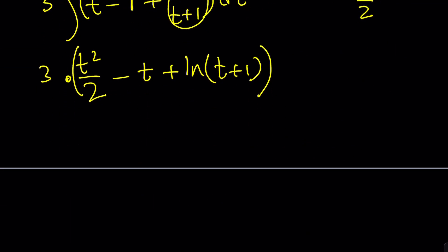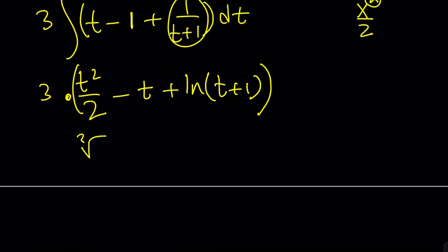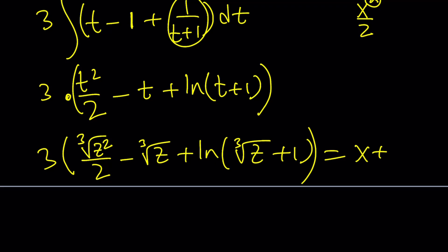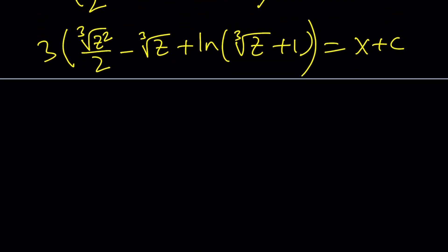So let's go ahead and replace t with cube root of z. That's going to be 3 times cube root of z squared divided by 2 minus cube root of z plus ln cube root of z plus 1. And then, that's equal to x plus c. Remember, on the right-hand side, we had integral of dx, which is what it is.